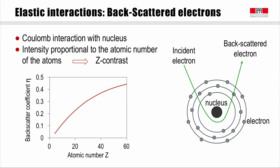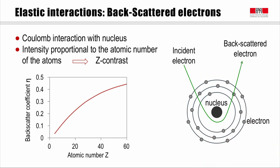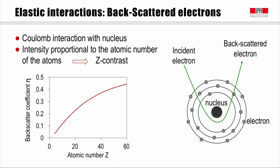Which information can we obtain with backscattered electrons? The Coulomb force with the nucleus increases with the atomic number Z. With the increase of atomic number, the number of positive charges increases, so the incident electron has a higher likelihood of being deviated. If more electrons are deviated, more will be collected, and the contrast will be brighter for a higher Z. This graph shows that brightness increases with atomic number — the backscattered coefficient as a function of atomic number — and a material with a higher average Z will appear brighter because more backscattered electrons are collected.